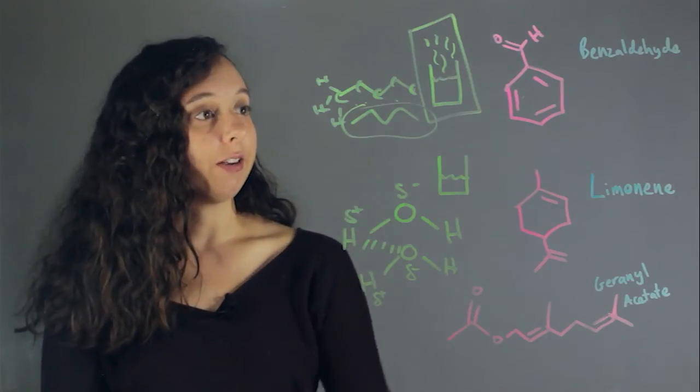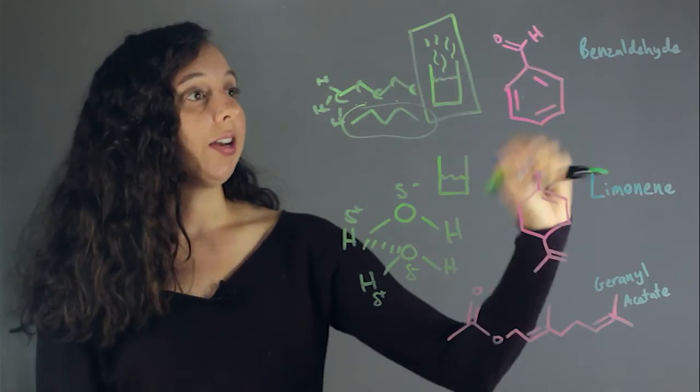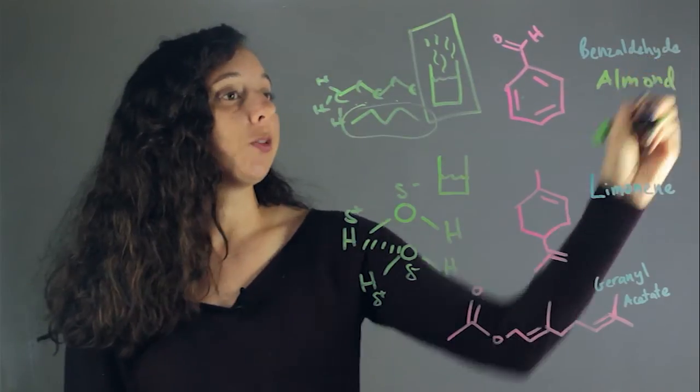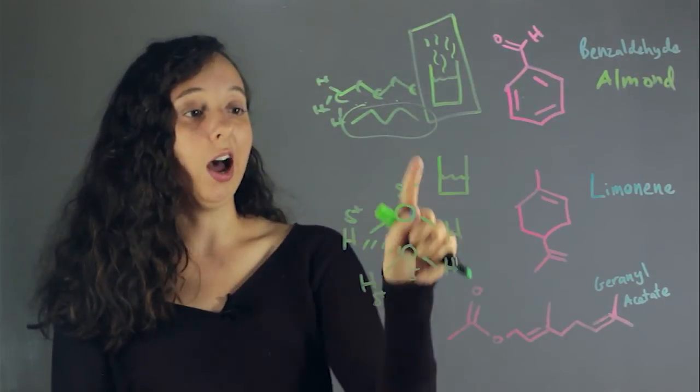Now let's take a look at three different very smelly compounds. First, we have benzaldehyde. And this is actually a smell of almonds. As we can see, mostly carbons and hydrogens, just one oxygen, and it's not an alcohol.